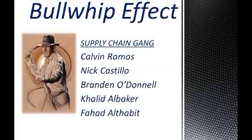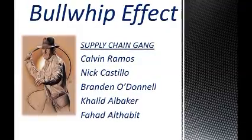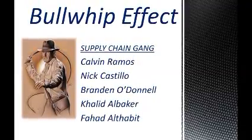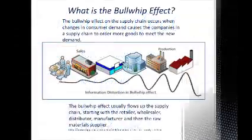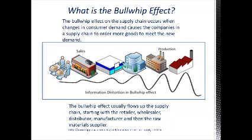The bullwhip effect. What is the bullwhip effect? The bullwhip effect on the supply chain occurs when changes in consumer demand cause companies in the supply chain to order more goods to meet new demand. Typically, the bullwhip effect flows up the supply chain starting with the retailer, wholesaler, distributor, manufacturer, and then raw material supplier.